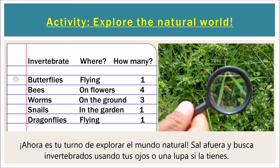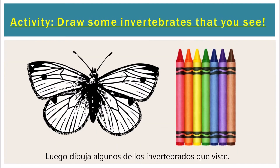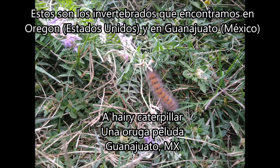Now it's your turn to explore the natural world. Go outside and look for invertebrates with your eyes or a magnifying glass if you have one. On a piece of paper, write down which invertebrates you see, where you see them, and how many you see of each. Then draw some of the invertebrates that you saw. These are some of the invertebrates that we saw in Oregon and in Guanajuato.